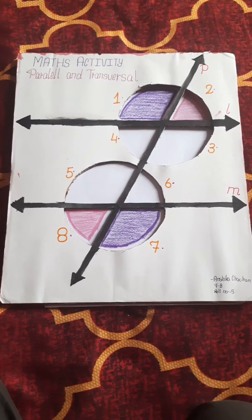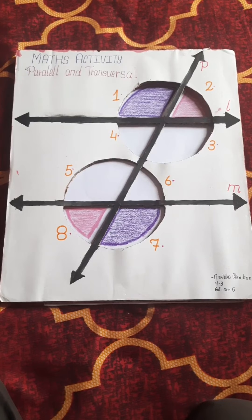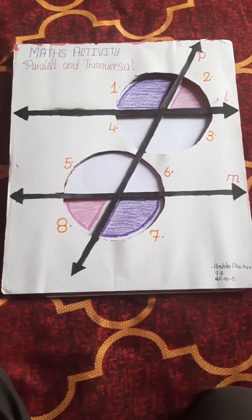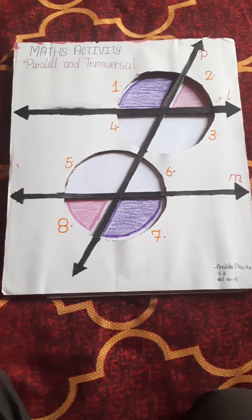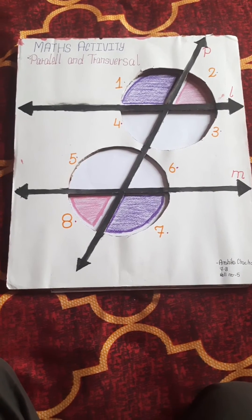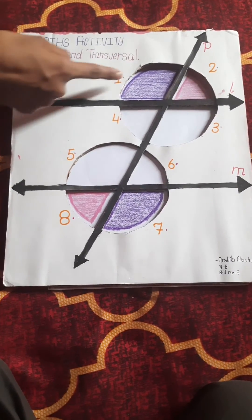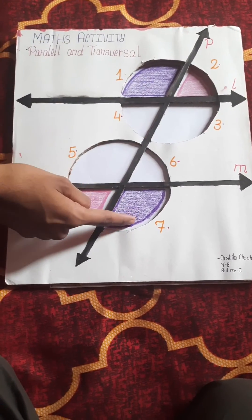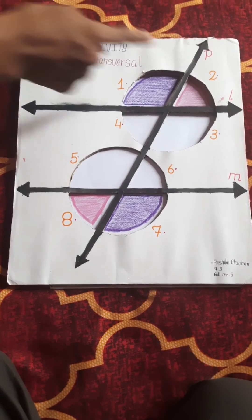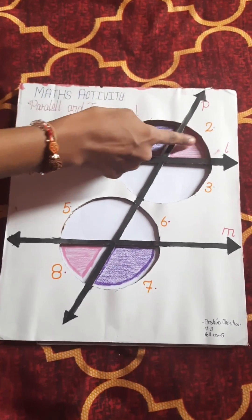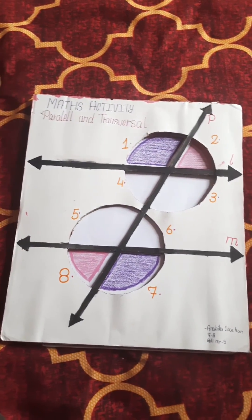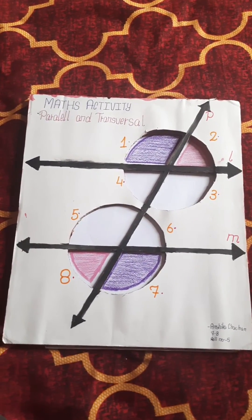Alternate exterior angles are a pair of angles on the outer side of parallel lines but on the opposite sides of a transversal. In this figure, angles 1 and 7, and angles 2 and 8 are alternate exterior angles.